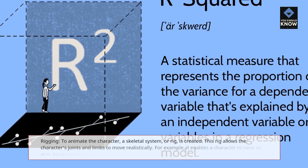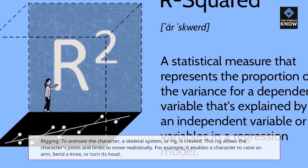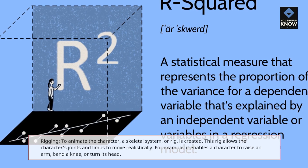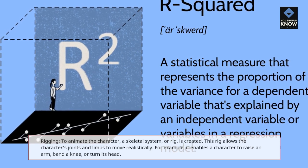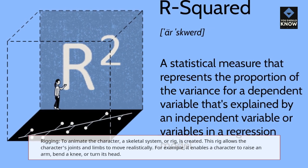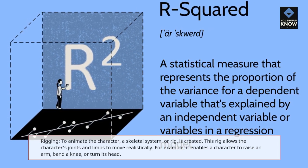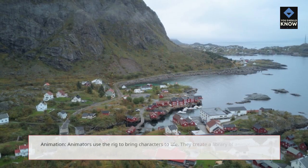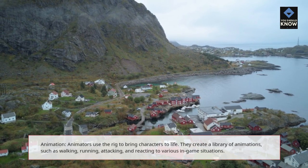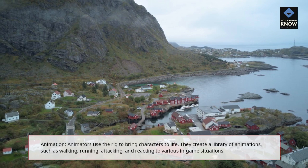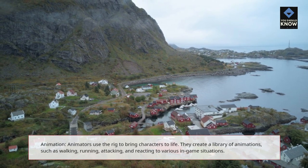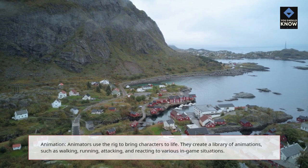Rigging: to animate the character, a skeletal system, or rig, is created. This rig allows the character's joints and limbs to move realistically — for example, enabling a character to raise an arm, bend a knee, or turn its head. Animators then use the rig to bring characters to life, creating a library of animations such as walking, running, attacking, and reacting to various in-game situations.